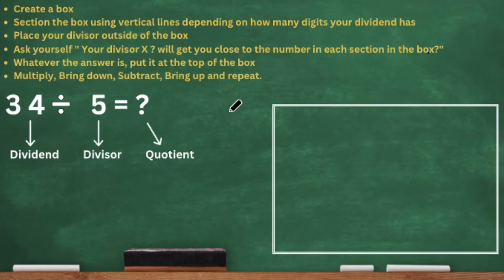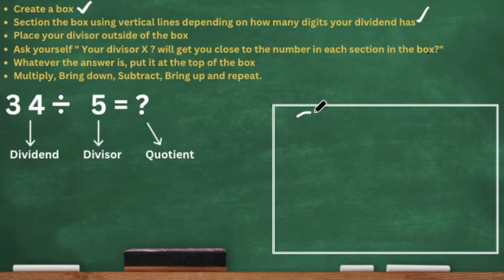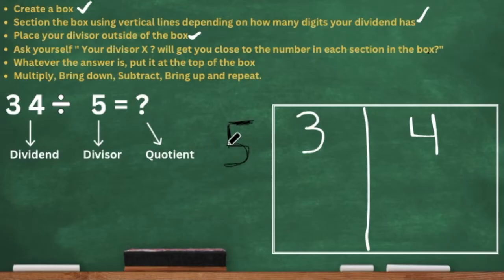Our first problem is 34 divided by 5. We need to create a box — we already have one. Next, we section the box using vertical lines depending on how many digits our dividend has. The first number in a division sentence is called your dividend, and here it is 34 — two digits. So we place our 34 inside the box, making sure the numbers are spread out with space in between so we can put that vertical line. Then we place our divisor, which is always the second number, right outside of the box. Our divisor is 5.